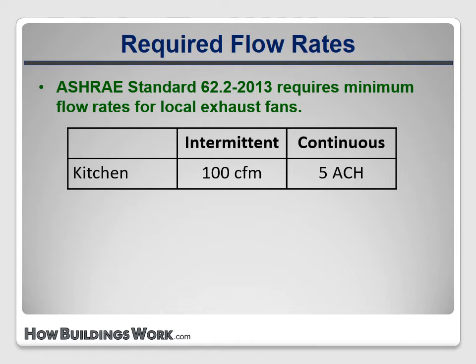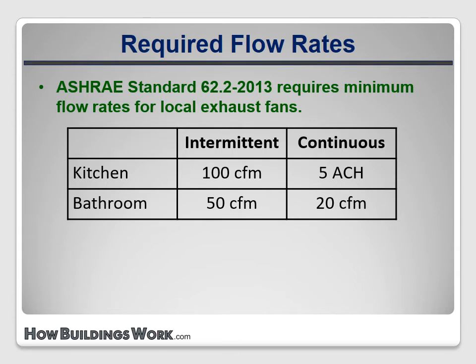So the bigger the kitchen, the higher the flow rate must be. This has changed a bit in the 2016 version to account for recent trends towards kitchens that are open to the rest of the house. I won't go into the details to avoid confusion, but if you're working under that standard you may need to do some additional research. For bathrooms, intermittent fans must provide at least 50 CFM. Continuous systems must provide at least 20.